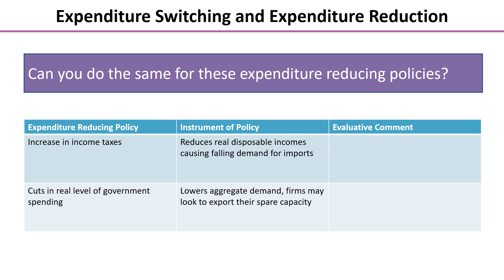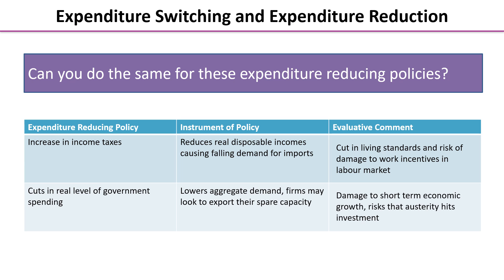My first expenditure reducing policy was an increase in income tax, and the risk here is that this will affect living standards and damage work incentives in the labour market. My second expenditure reducing policy is cuts in the real level of government spending — a possible evaluative comment is the damage to short-run economic growth, and again the risk that this type of austerity will hit investment, which will have consequences further down the line for competitiveness.